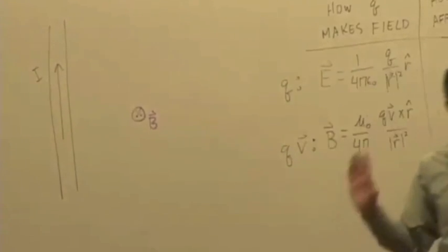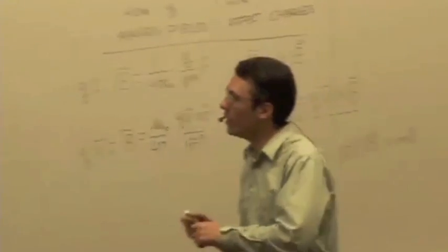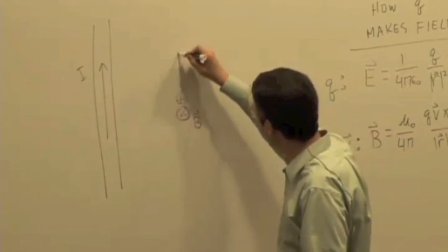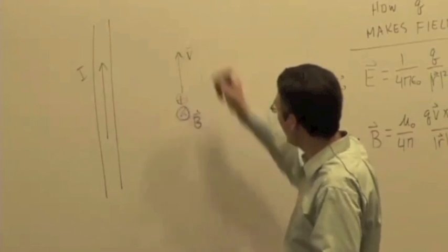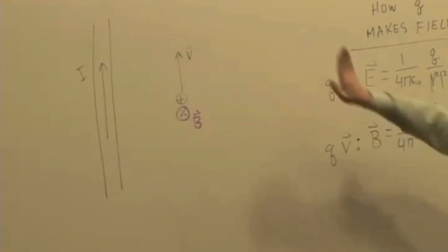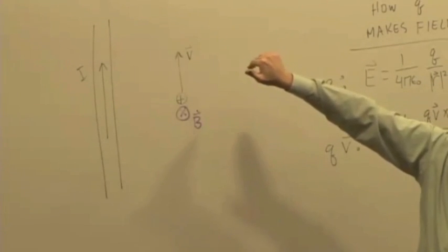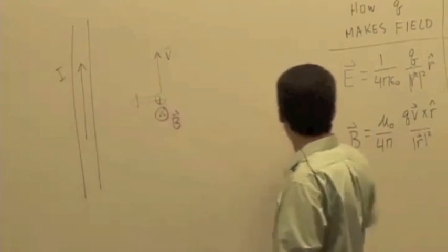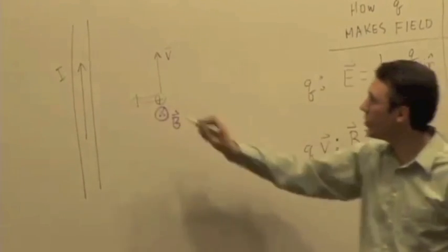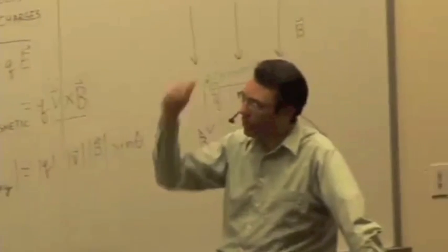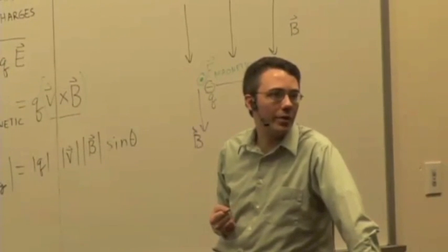So now we have a proton in the presence of a magnetic field pointing in, and the velocity is upward. The force on that proton is QV cross B — V points up, curl the fingers in, thumb points in the direction of the force. When you multiply by a positive charge, you still get the same direction. So it's got to be a current flowing in the positive Y direction. If it were in the negative Y direction, the field direction would be reversed, and therefore the force direction would be reversed.